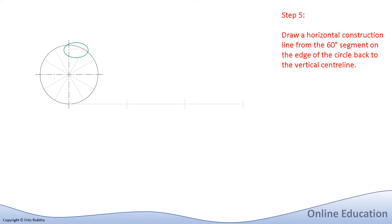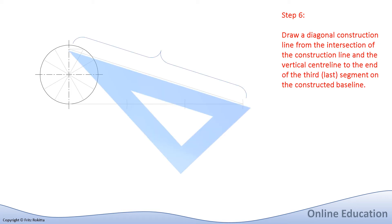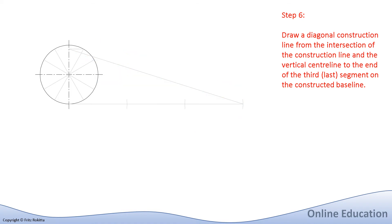Now we can see the light construction line that we just drew in better detail. This is the result of our construction up to this stage on paper. Next, we will make use of our set square or a ruler that is long enough to draw a light construction line from the horizontal construction indicated in the previous step, all the way to the third segment at the end of our baseline. The diagonal line that we just drew is in fact the length of our circumference.